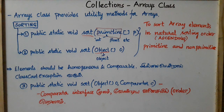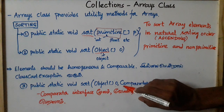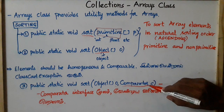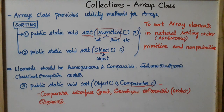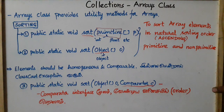For object arrays, we can pass a comparator interface. With the comparator interface, we can get ascending or descending order. We will check the comparator interface in the next video.